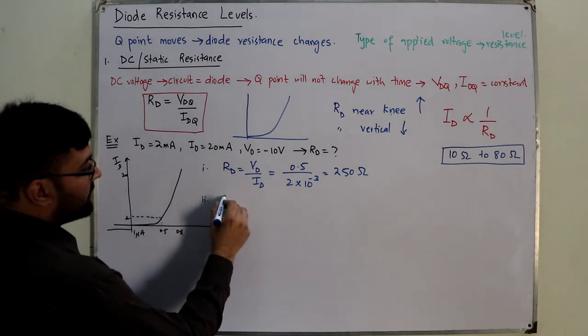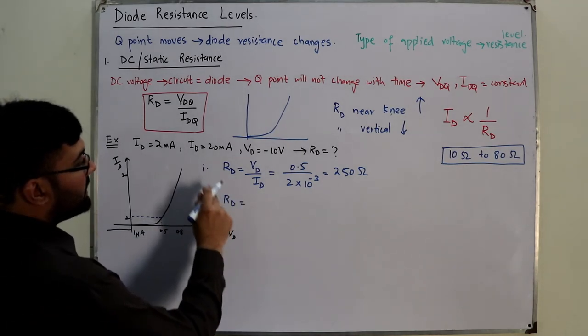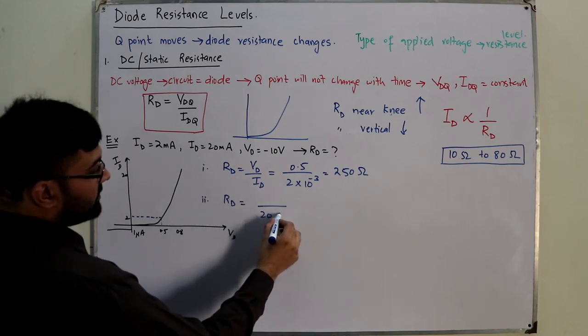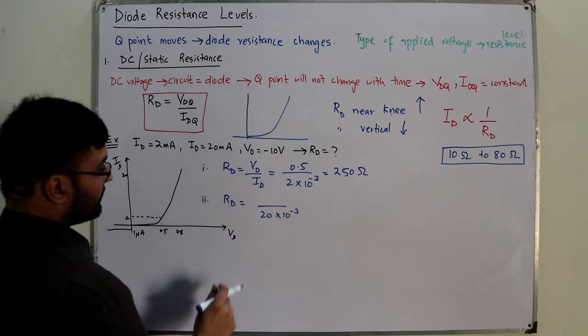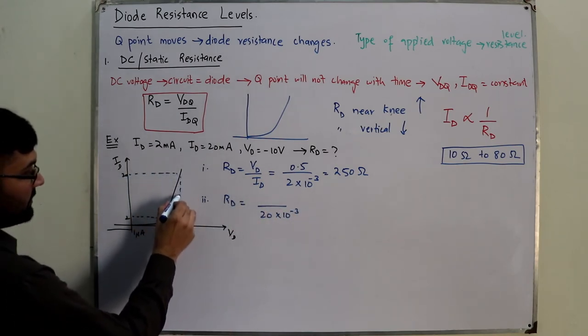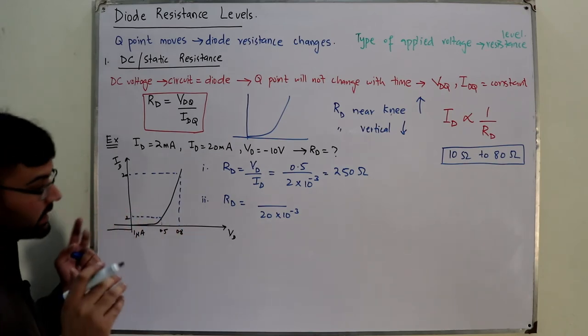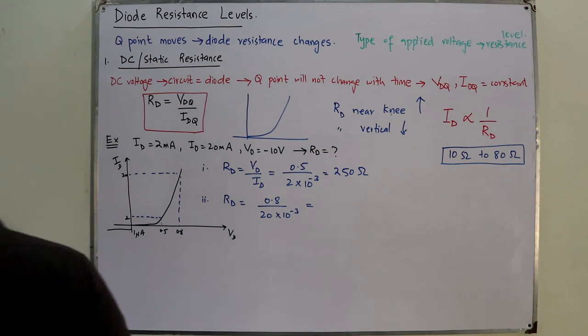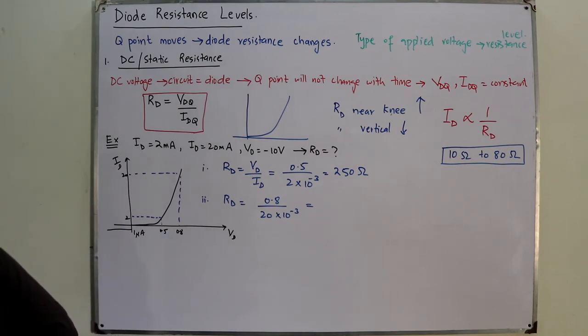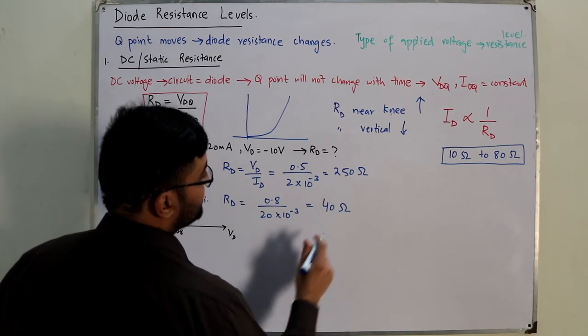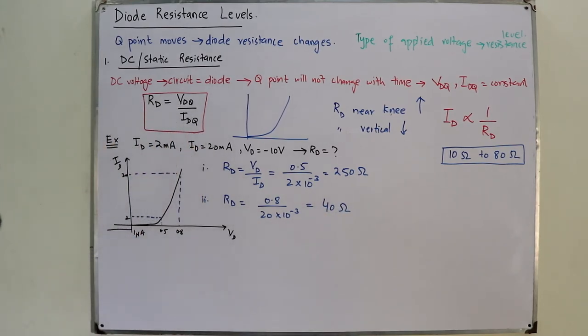The second, what do you do? The same way, Rd, the current is given which is 20 milliamperes, and the corresponding voltage you could find from the graph. If you draw it on a proper scale, of course, you have 0.8 volts and the answer to this is 40 ohms.